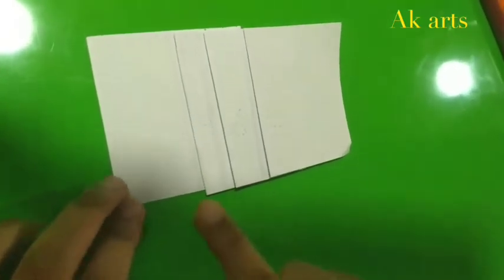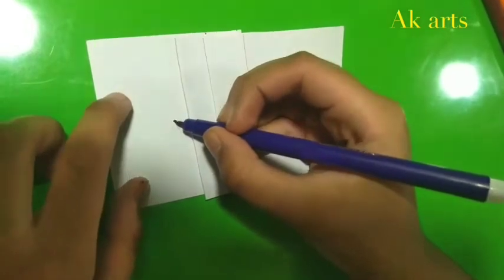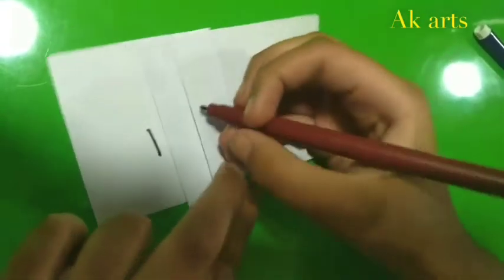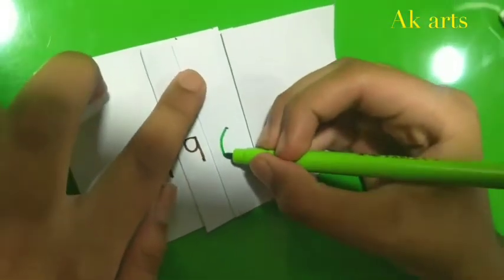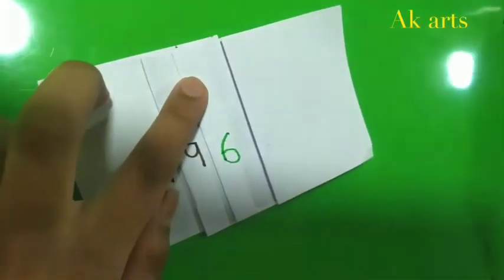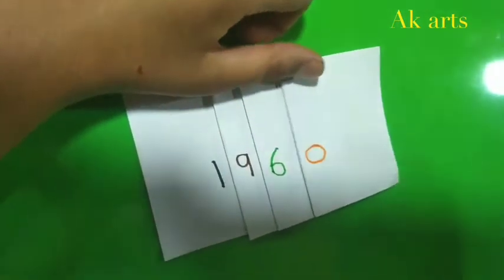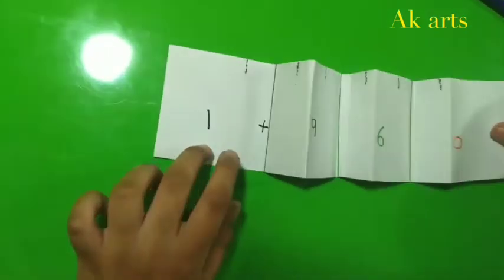Write a 4-digit number over these places. Open the foldings.